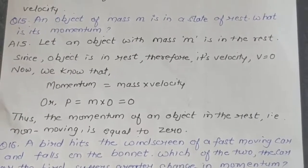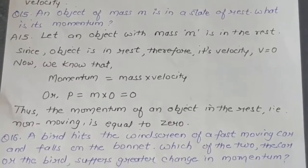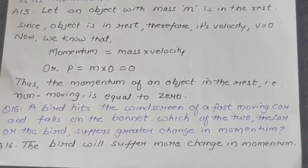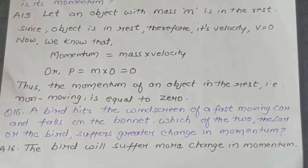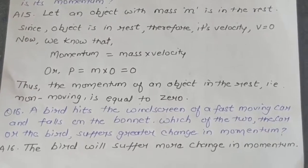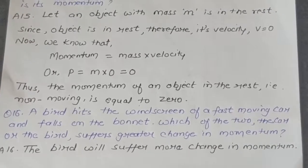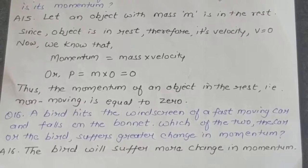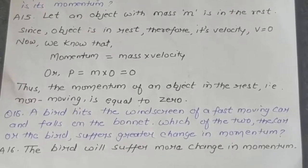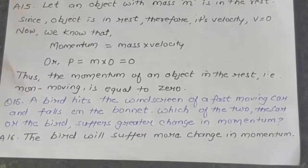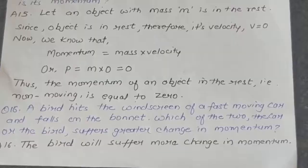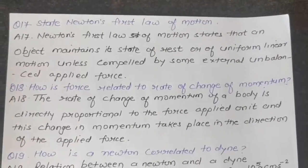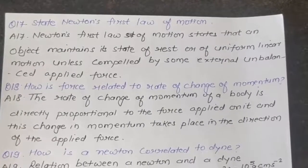Question 16: A bird hits the windscreen of a fast-moving car and falls on the bonnet. Which of the two — the car or the bird — suffers greater change in momentum? Answer: The bird will suffer more change in momentum.